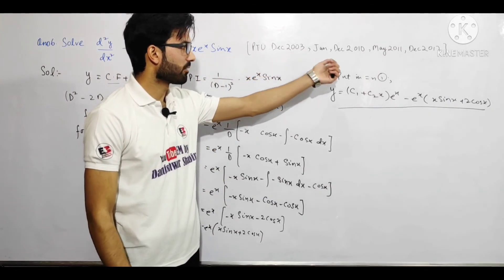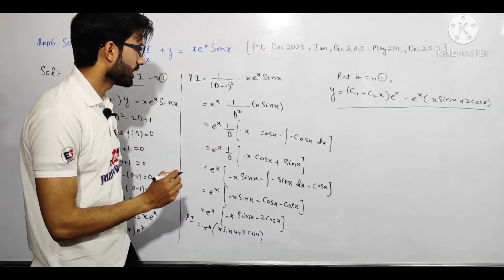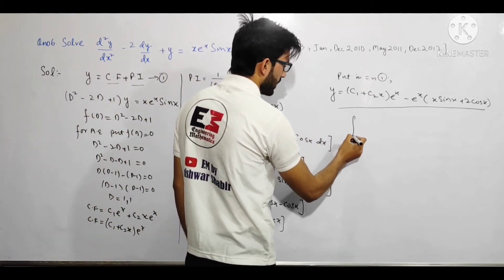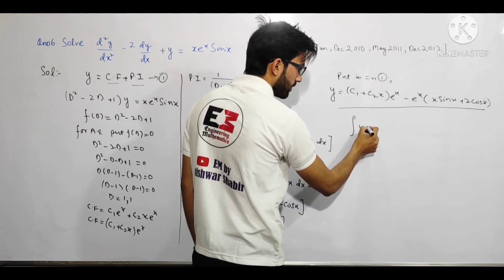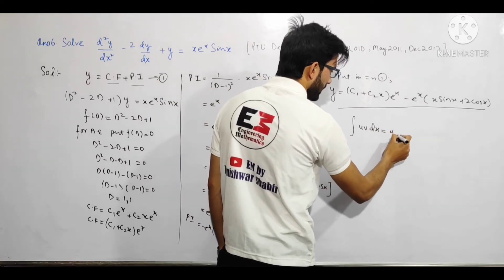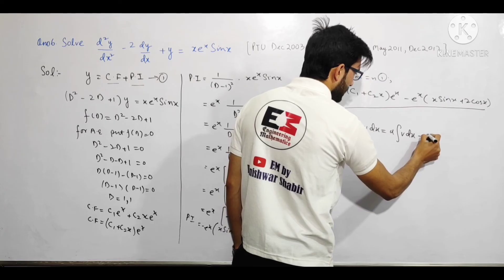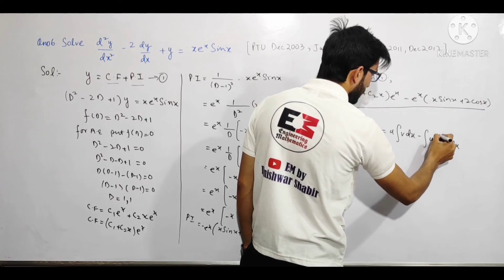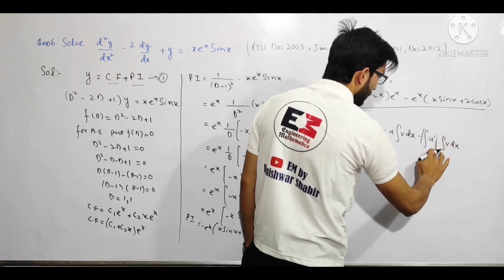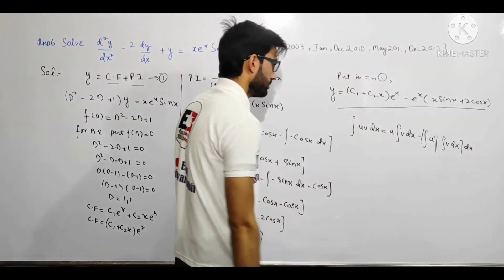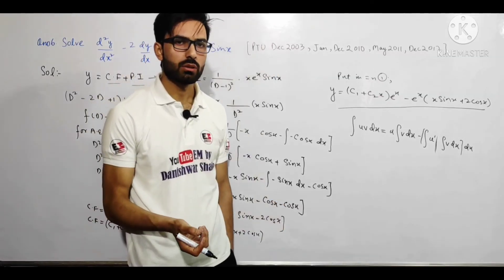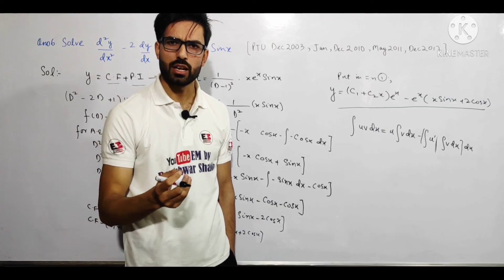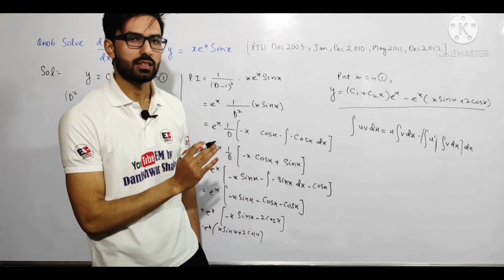This differential equation has come in PTU, so I thought to solve it. Remember: if we have two functions, we use integration by parts. The formula is: integral of u·v = first × integration of second, minus integration of [differentiation of first × integration of second]. Also remember: 1/D² means double integration, and D² means double differentiation.